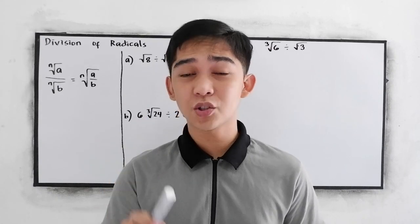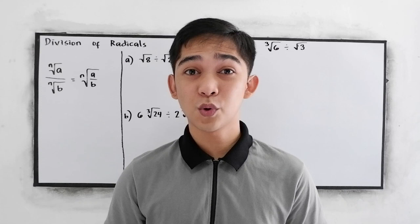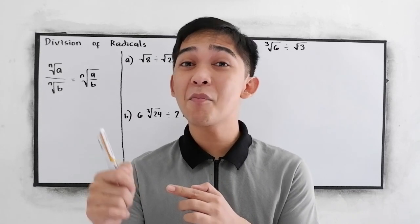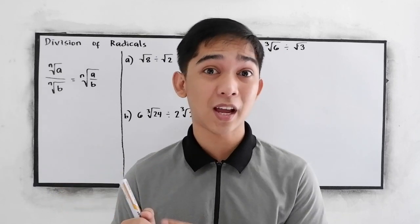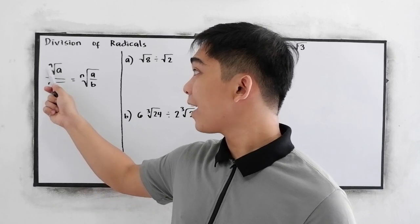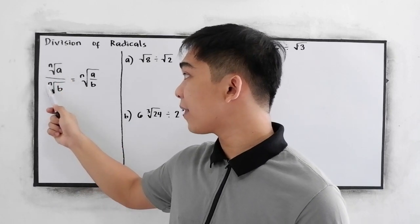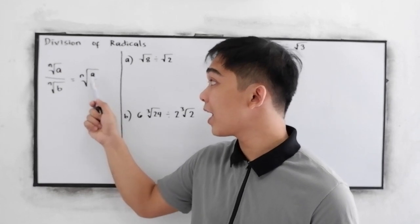Make sure that you watch our videos on multiplication of radicals because we will be needing some principles from that multiplication of radicals in this topic, division of radicals. Now, if we have n root of a over n root of b, that is equal to n root of a over b.